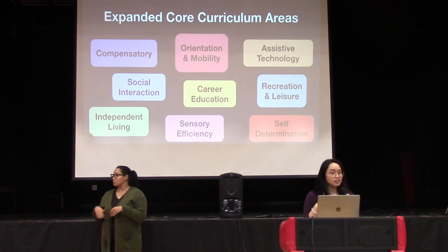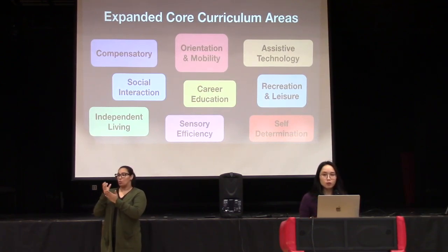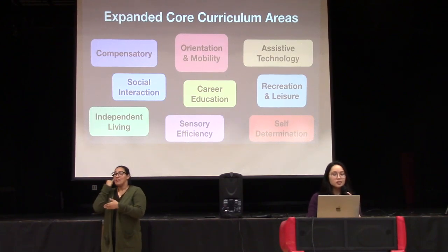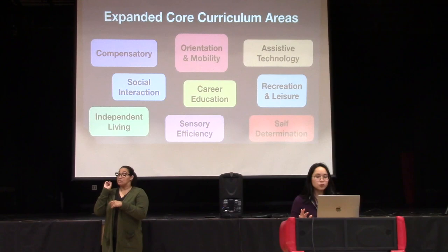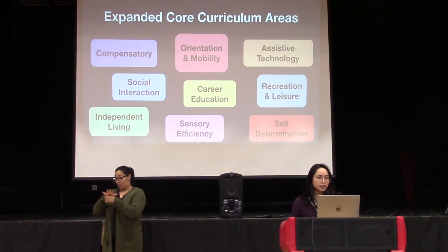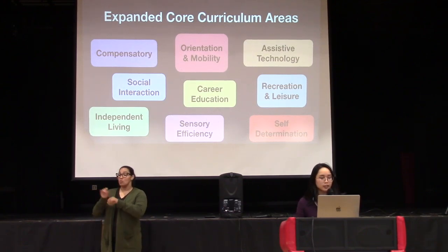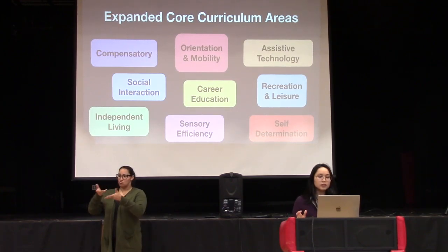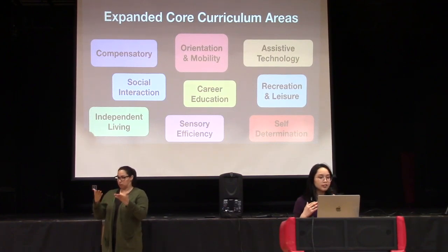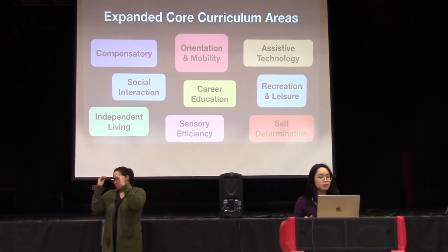The ECC — Expanded Core Curriculum — addresses the knowledge and skills needed by students with visual impairments due to their unique disability. The nine areas include assistive technology, career education, compensatory skills, independent living, orientation and mobility, recreation and leisure, sensory efficiency, self-determination, and social interaction. These are all the skills our students need to access the Common Core Curriculum and function independently in life. TSVIs and O&M specialists are typically responsible for assessing and teaching these skills, but they may ask for support from psychologists and SLPs to help facilitate and document progress.